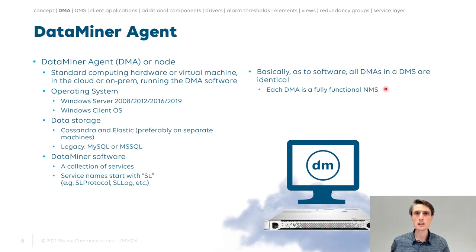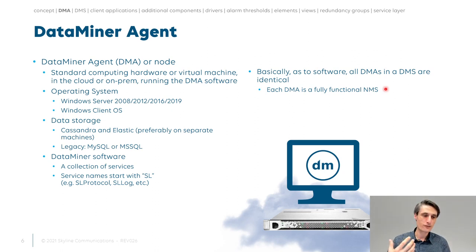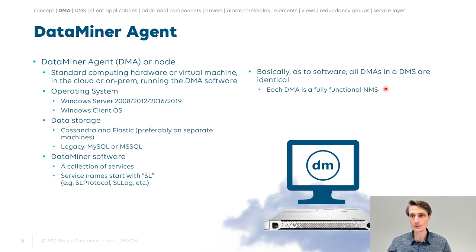An important point: one DataMiner agent or node is a fully operational DataMiner system. It does everything — from collecting information and monitoring, alarming, performance, and AI, up to orchestration and automation. All the functionality is in there. If you have multiple DataMiner agents, they are all alike. We'll come back to that.